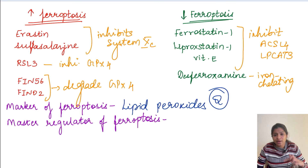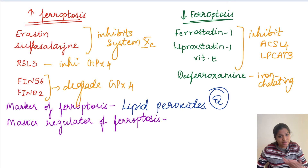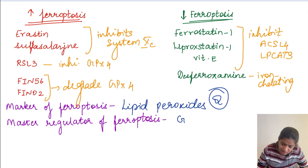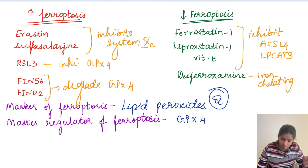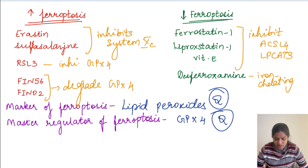The master regulator of ferroptosis is GPX4. When glutathione and glutathione peroxidase are present, lipid peroxides formed by free radicals are converted to lipid alcohols and degraded. So GPX4 is the master regulator. Remember: lipid peroxide is the marker of ferroptosis, and GPX4 is the master regulator.